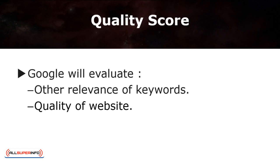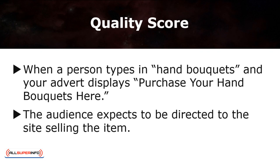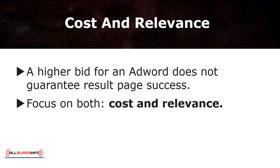Now, let's look at the quality score. Before your keywords can reach the results page, Google will evaluate the relevance and usefulness of your selected keywords for ads. This is to ensure that your keywords are relevant to the users. Google also looks into the quality of your website. For example, if the user types in 'hand bouquets' and your advert is 'purchase your hand bouquet here,' once they click on your ad, they would expect to be directly led to a website selling hand bouquets — not a generic homepage. A higher bid for an ad word does not necessarily guarantee results page display success. Even if your rival's bid is higher, it's possible that you appear above their ad because your quality score is better. Higher quality score means lower CPC. So, focus on both cost and relevance.